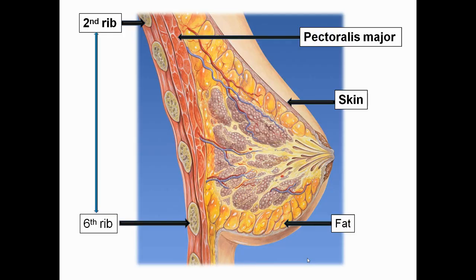We can see in this picture how it is located. This is the 2nd rib and we can see the 6th rib also — vertically it is present from the 2nd rib to 6th rib. This is the coronal plane of the breast. We can see the skin, the fat, and some lobules, and we can see the muscles also — that is the pectoralis muscle. The breast is situated on the pectoralis muscle.